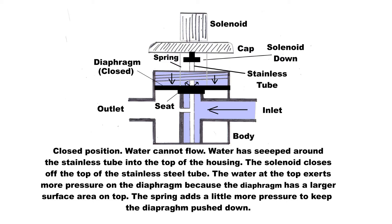Water has seeped around the stainless tube into the top of the housing. The solenoid closes off the top of the stainless steel tube. The water at the top exerts more pressure on the diaphragm because the diaphragm has a larger surface area on top. The spring adds a little more pressure to keep the diaphragm pushed down.